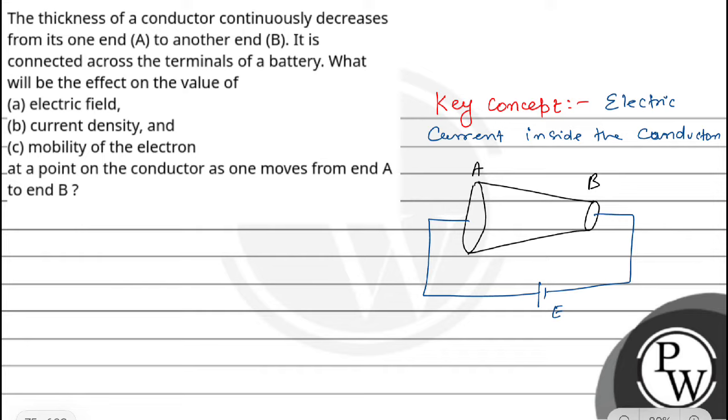We know from conservation of charge that the current from the battery will flow through. The current at A and the current at B - the current comes in and it will go out. So I can see the current at B is same as that of A.